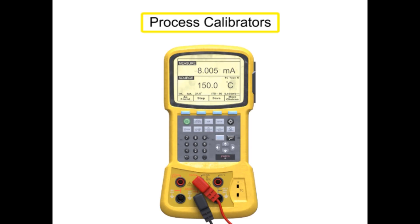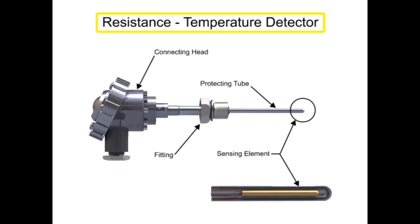Process calibrators are used by technicians to measure and calibrate sensors and transmitters. Using an RTD, or Resistance Temperature Detector, as an example, the initial step of calibration is verifying the accuracy of the temperature-sensing device.